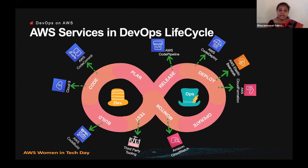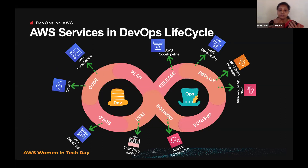Looking at the DevOps lifecycle, what AWS services are available to help us achieve our DevOps practices? When we want to code, we have AWS CodeCommit as a source control repository. Developers working locally who want to collaborate across geographies can use CodeCommit — it's similar to Git. If you know Git, you already know 90% of CodeCommit. Cloud9 is the integrated IDE you can use for development.